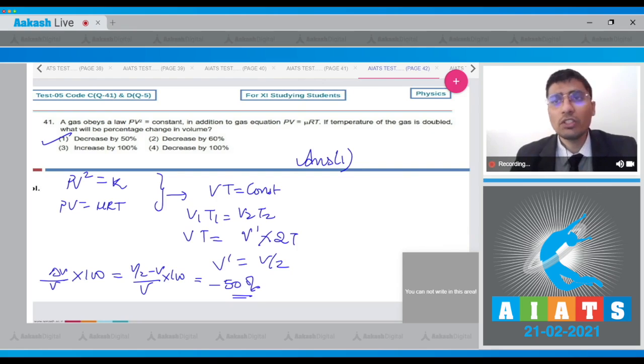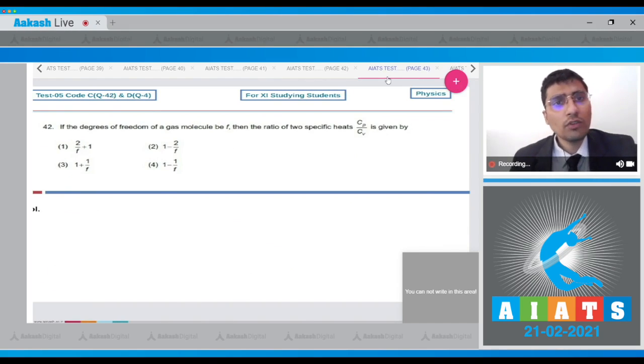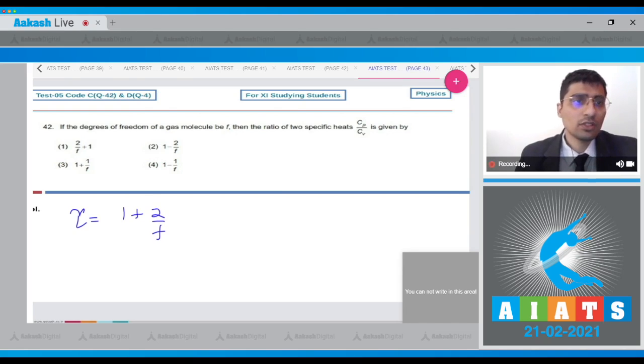Moving on to question 42. If the degree of freedom of gas is F, then the ratio of two specific heats is given by? This is a factual question. Gamma is given by 1 plus 2 by F, and hence for this question the correct answer is straightaway option number 1.